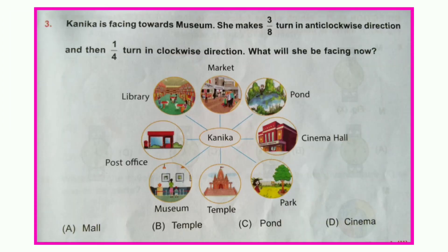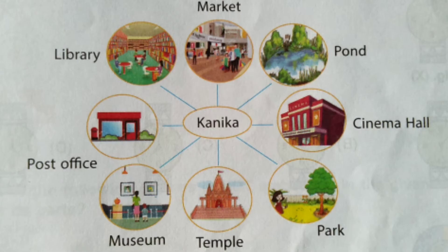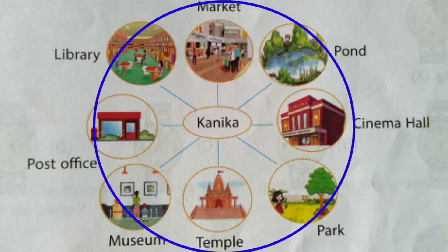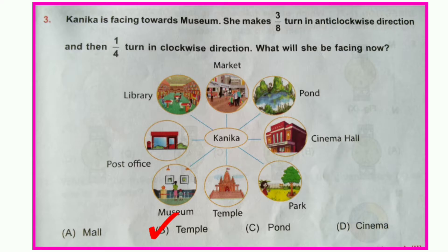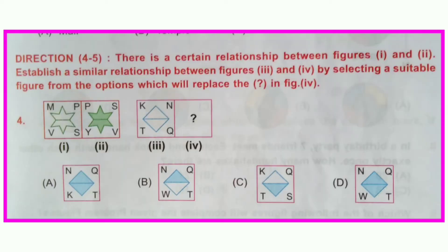Question number three: Konika is facing towards the museum. She makes a three-eighths turn in the anti-clockwise direction and a one-fourth turn in the clockwise direction. What will she be facing now? Konika is at the center position — she is only rotating, not displacing. The circle is divided into eight equal parts. She turns three parts from museum to cinema hall in the anti-clockwise direction. The equivalent fraction of one-fourth is two-eighths, so from cinema hall she moves two parts clockwise. Her face is now towards the temple. Option B is correct.